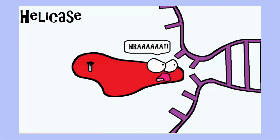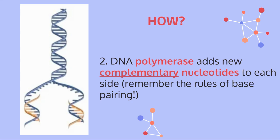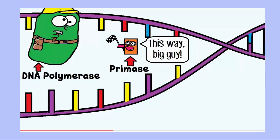What you see on screen is the enzyme helicase coming in and separating the two strands of DNA. After the strands have been separated, another enzyme called DNA polymerase comes in. DNA polymerase's main job is to add complementary nucleotides — including the phosphate, base pair, and ribose sugar — to each strand of DNA being unzipped.